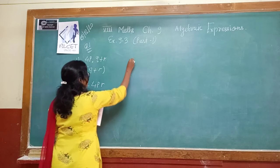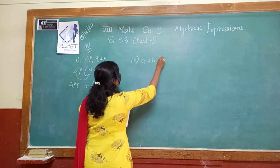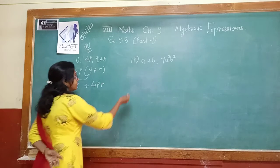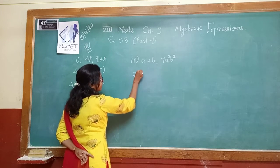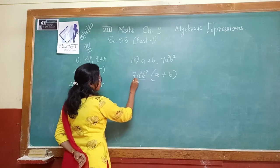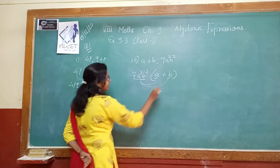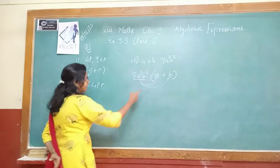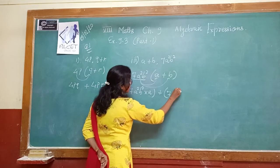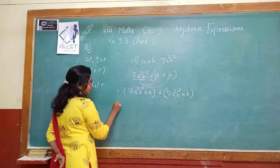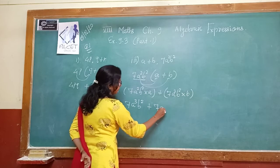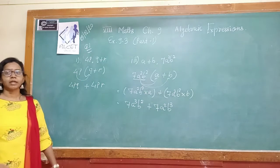You can try the second one by yourself. The third question is (a + b) multiplied with 7a²b². This is a binomial multiplied with a monomial. Write the monomial term first: 7a²b² in brackets, multiplied by (a + b). Now do the multiplication — this term multiplies with a, then with b. So we get 7a²b² × a plus 7a²b² × b. For the first part, a² × a¹ gives a³, so the answer is 7a³b² + 7a²b³.